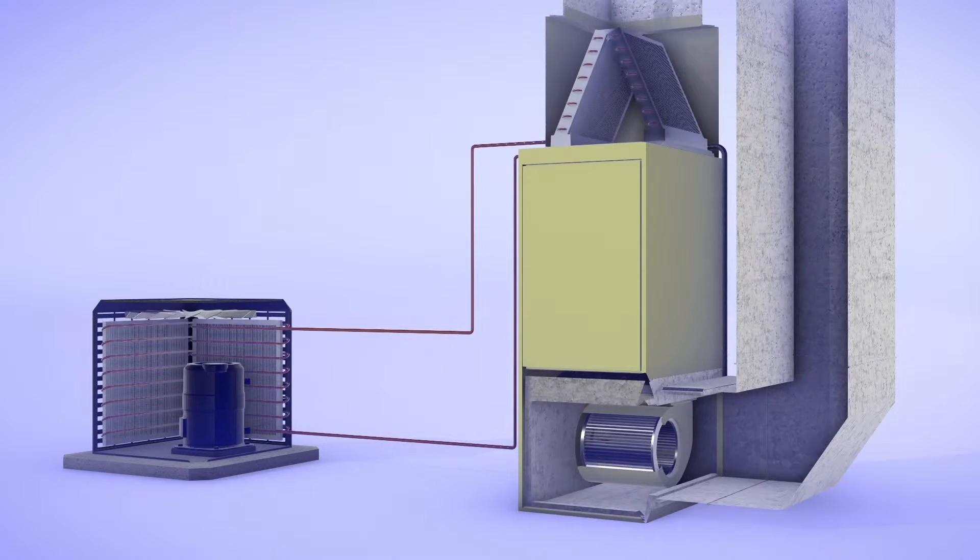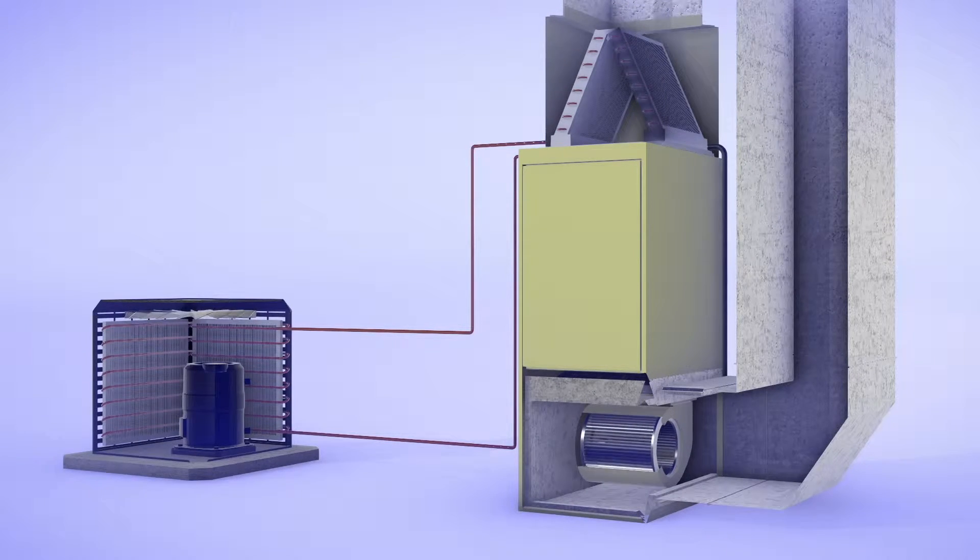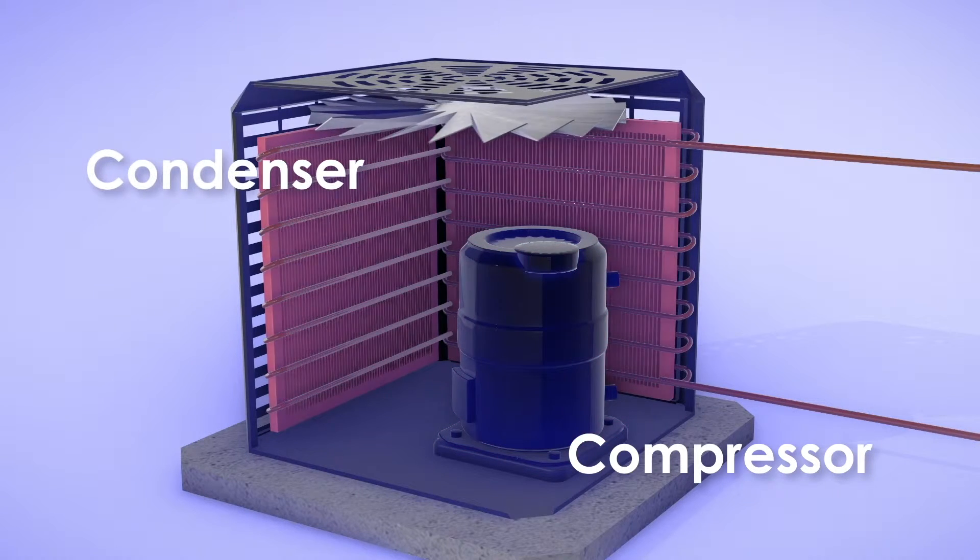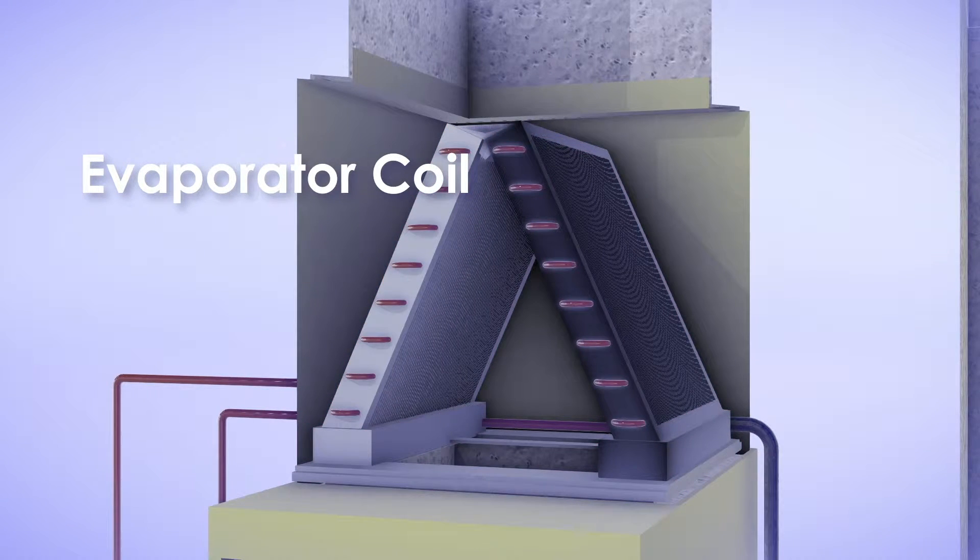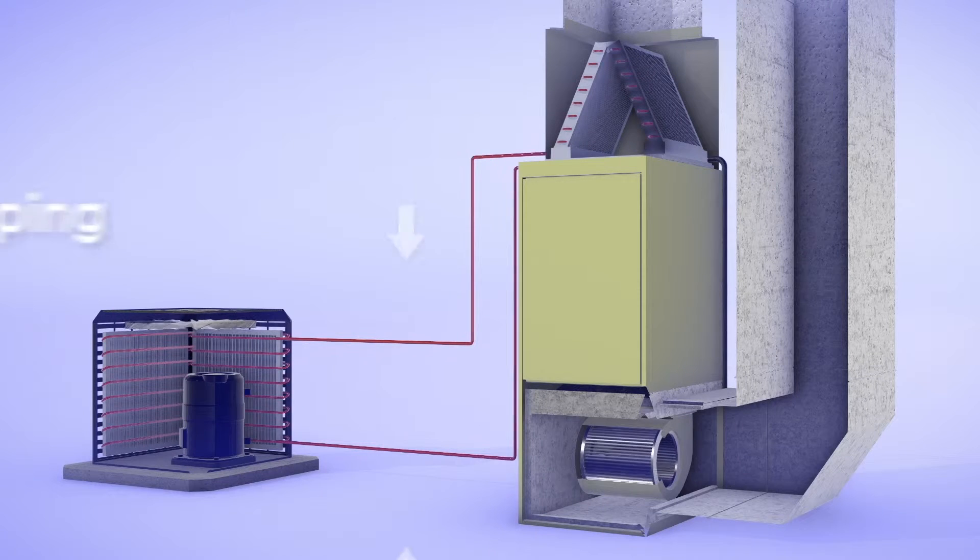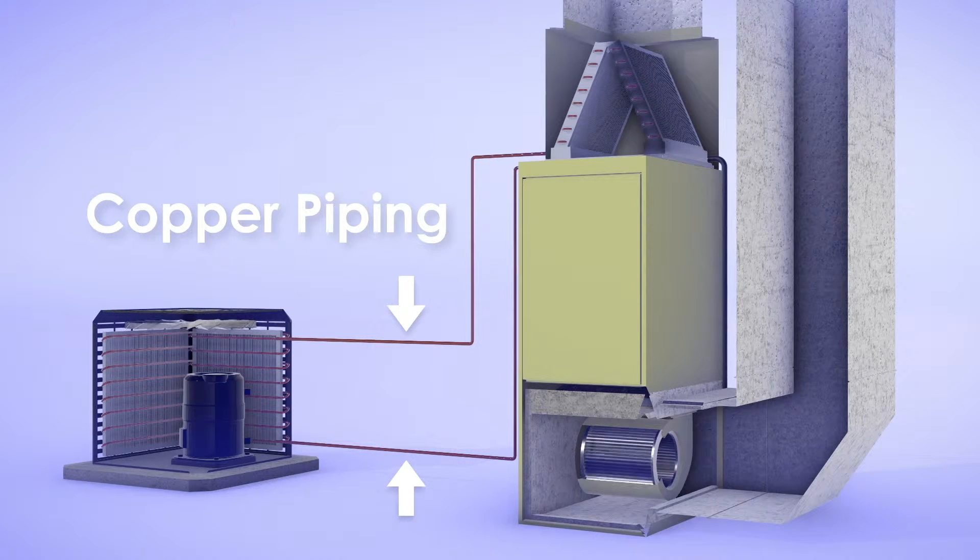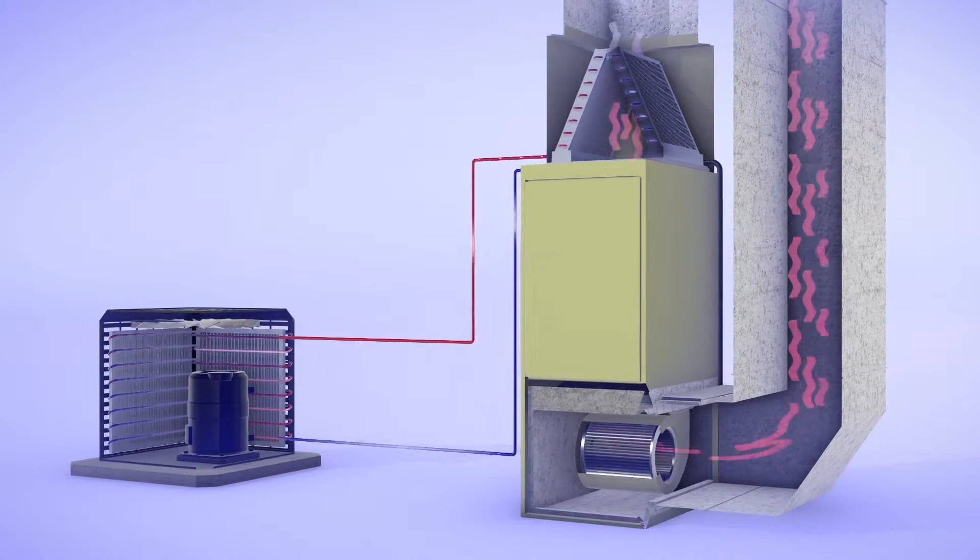Your AC unit is made up of three key components: the compressor and the condenser, both located outside the home, and the evaporator coil, mounted to the furnace inside the home. Copper piping connects the inside and outside units, which contains refrigerant.